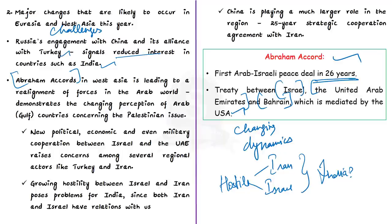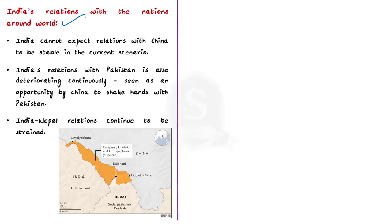The author talks about India's relations with nations around the world and notes that India has failed to make an impact in its foreign policy. First, we cannot expect Sino-Indian relations to be stable in the current scenario, and the confrontation between India and Chinese armed forces is expected to continue. Second, India's relations with Pakistan are deteriorating continuously. This is seen as an opportunity by China to shake hands with Pakistan. The China-Pakistan Economic Corridor, which passes through Indian territory, is severely opposed by India as it violates India's territorial integrity.